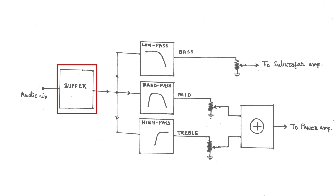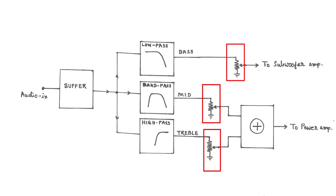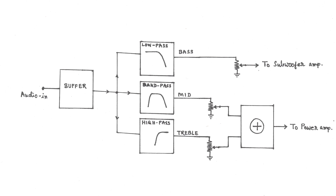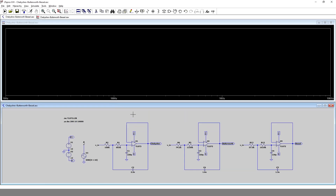The input audio signal will first go to a buffer stage, which does not increase voltage but is necessary to avoid the loading effect on the audio source. It then goes to three different filters: the low-pass filter separates the bass band, the band-pass filter separates the mid band, and the high-pass filter passes only the high-pitched treble band. The outputs feed potentiometers. The wiper of the bass band potentiometer goes to the subwoofer amplifier, acting as an active crossover filter. The mid and treble band potentiometer outputs go to an adder circuit, whose output goes to the power amplifier stage.